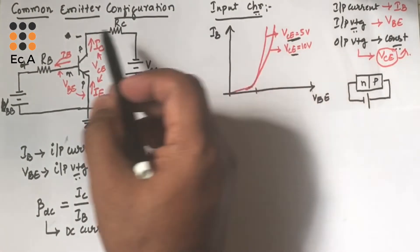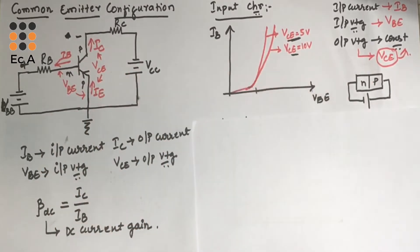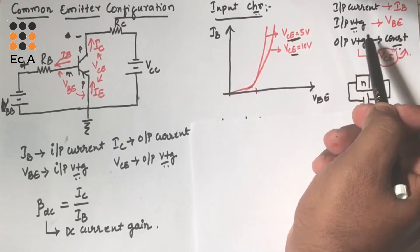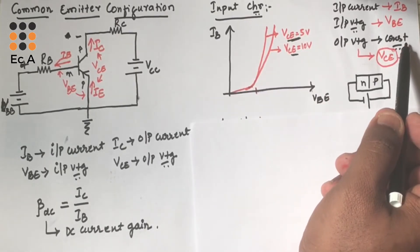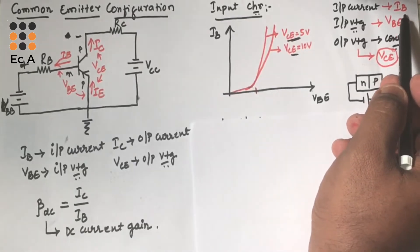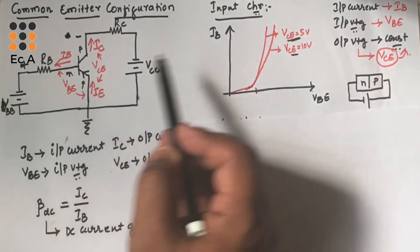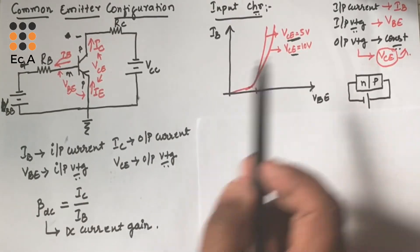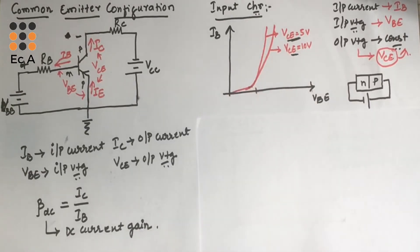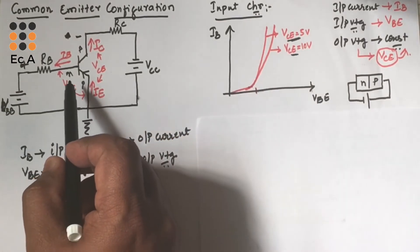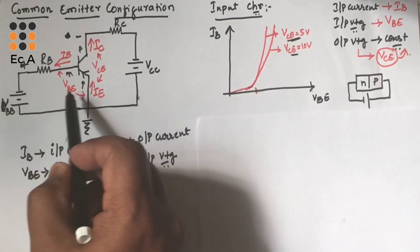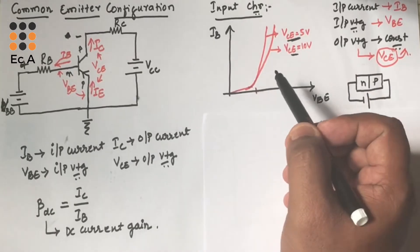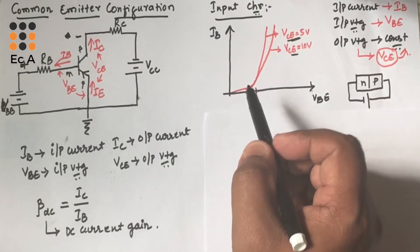Now let us understand the input characteristics of common emitter configuration. To understand the input characteristics, we need to consider the input current, input voltage, and the output voltage, which should be kept constant. Here the input current is IB, input voltage is VBE, and output voltage is VCE, which should be kept constant. On the input side, the N side is connected to negative and P side is connected to positive.